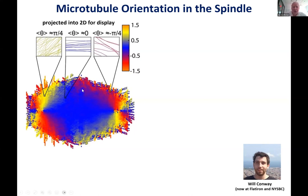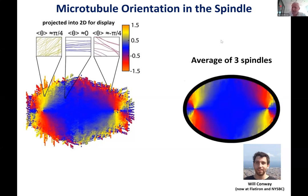He looked at the EM reconstructions and asked: what's the orientation of microtubules everywhere? In a 2D projection, microtubules near the pole are oriented in various directions, while in the middle they're more horizontal. Thomas's group had data from three cells, and Will averaged them together and calculated the orientation of microtubules everywhere throughout the spindle. The question was: what are the mechanics of microtubule organization and spindle morphology more broadly?